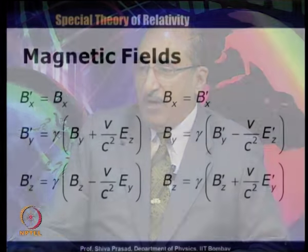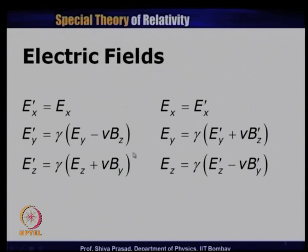I want to show that the last two magnetic field transformation equations can also be derived using the last two electric field transformation equations. There is some interdependence of these equations on each other, so let me discuss that particular aspect before we come to an actual example.